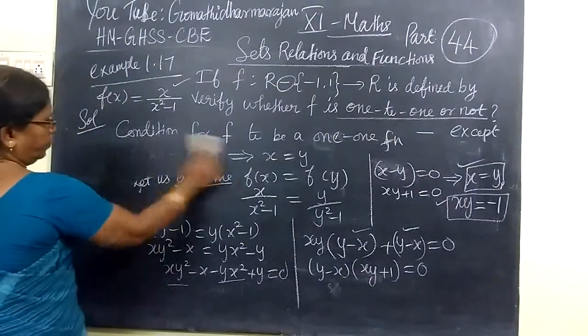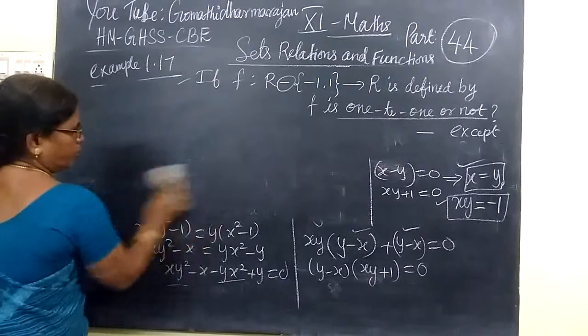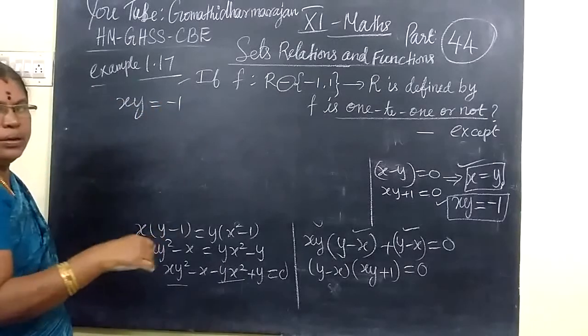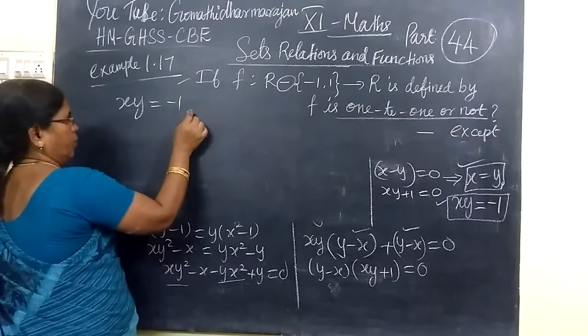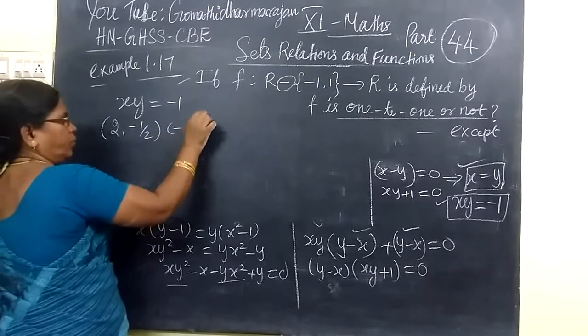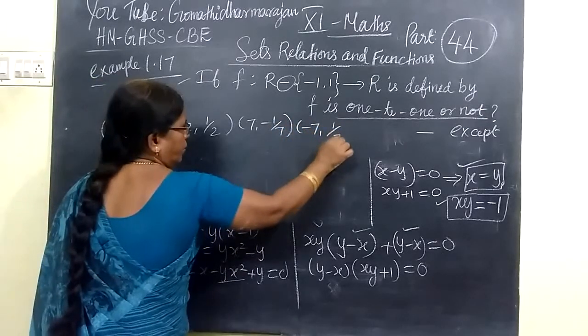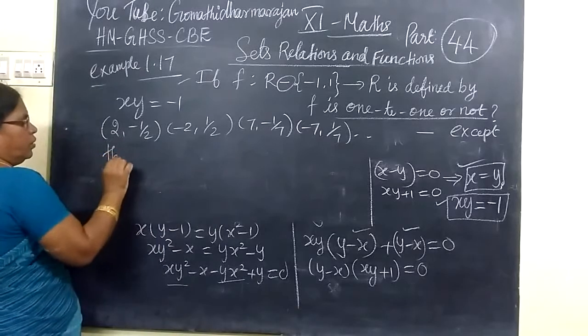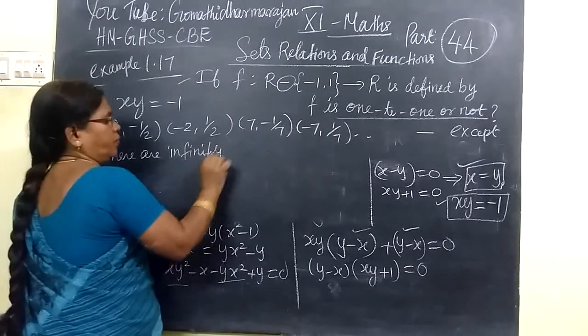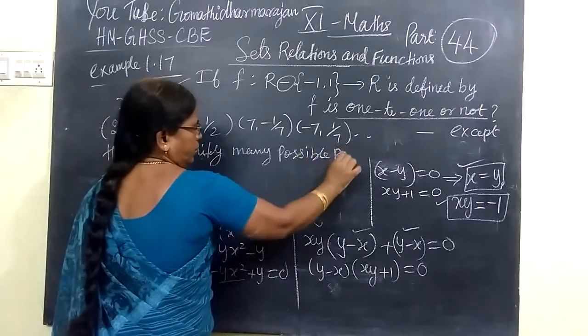Here you are getting x₁x₂ = -1. We can generate possible pairs: (2, -1/2) or (-2, 1/2), (7, -1/7) or (-7, 1/7), etc. There are infinitely many possible pairs. This is another pair.